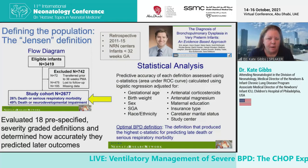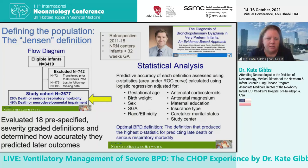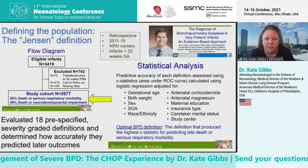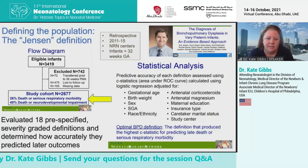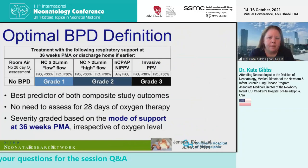He developed 18 pre-specified severity-graded definitions to see how they could accurately predict later outcomes. One of them was the existing NIH definition, which used a number of factors in a regression model. The optimal BPD definition was the one that produced the highest C-statistic for predicting late death or serious respiratory morbidity.